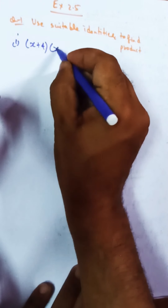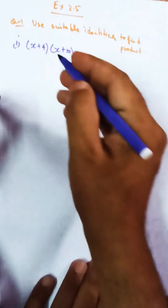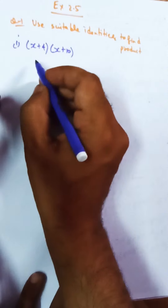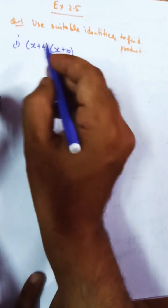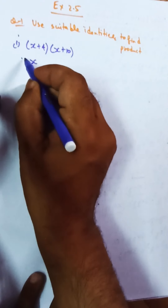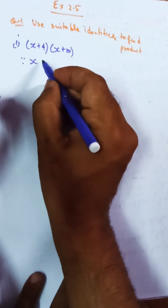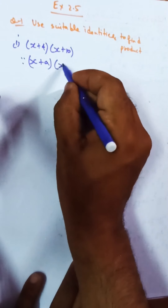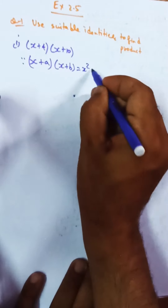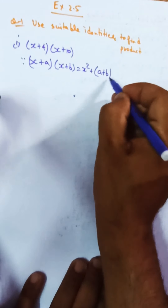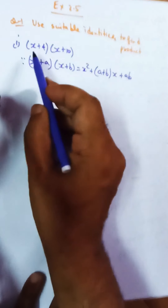Today we will be starting with question number one of Exercise 2.5. The first part is (x+4)(x+10). We use suitable identities to find the product. Since we have x, we can write it as x+a form. The identity is: (x+a)(x+b) = x² + (a+b)x + ab.